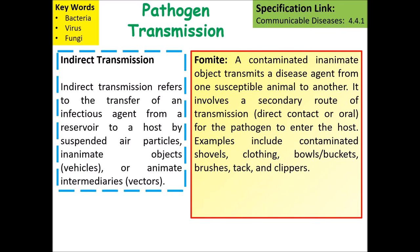Fomites involve a secondary route of transmission for the pathogen to enter the host. Examples include contaminated shovels, clothing, bowls, buckets, brushes, clippers and all manner of objects.